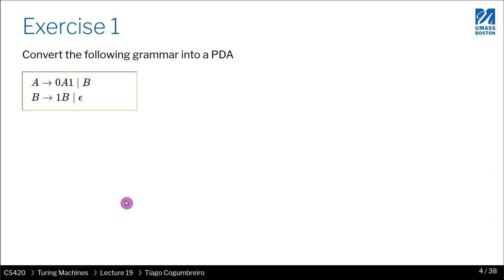Given the following grammar, where you have two productions, it starts with A, then it produces 0A1, or it produces B, and then from B it produces 1B, or epsilon.